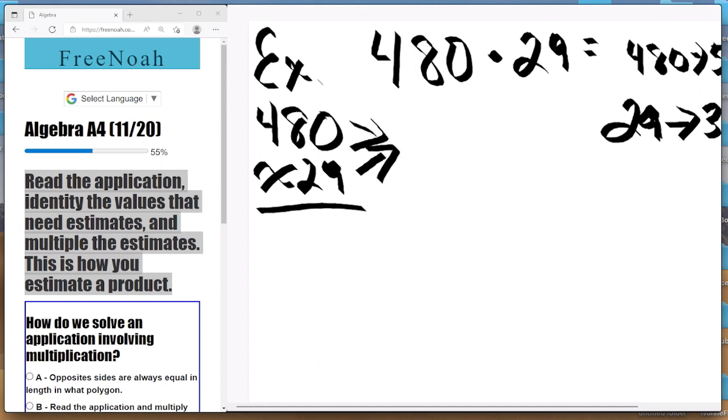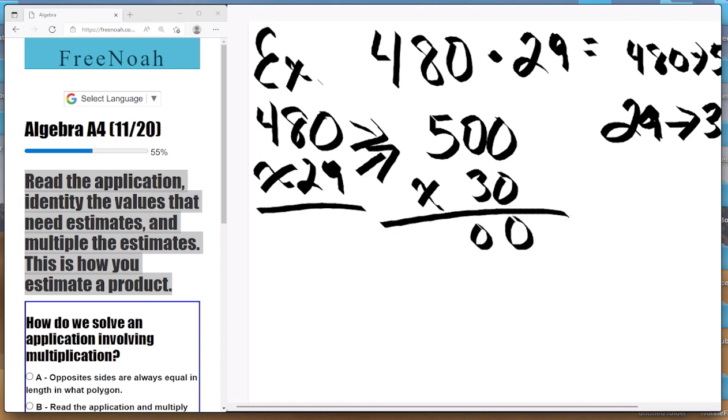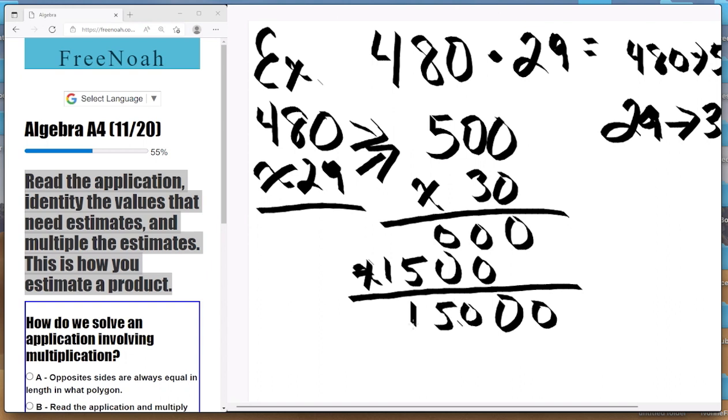So 480 times 29, when you round the factors you get 500 times 30. Simple: zero times zero is zero, zero times five is zero, so the first line everything is zero. Then we have zero times three is zero, zero times three again is zero, and then five times three, that's 1500.